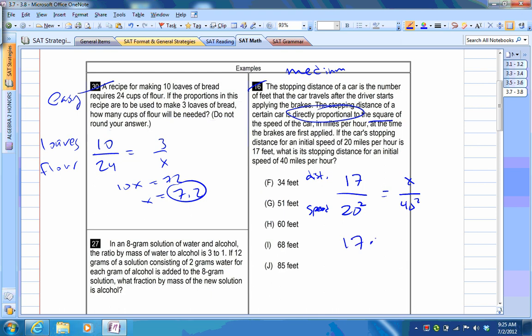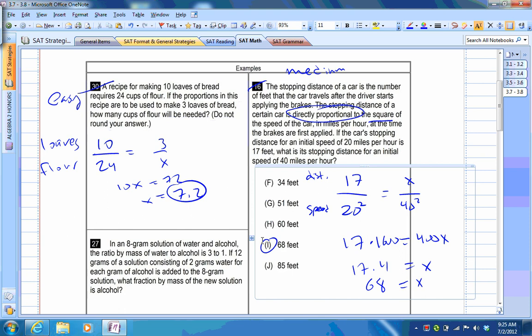So you get 17 times 1600 equals 400x. Divide both sides by 400. You get 17 times 4, because 1600 divided by 400 is 4. So you get 68. You can also use a calculator to work that out, but it's very important to see the square part. So it's like the first one we just did, but there's a slight twist to it.